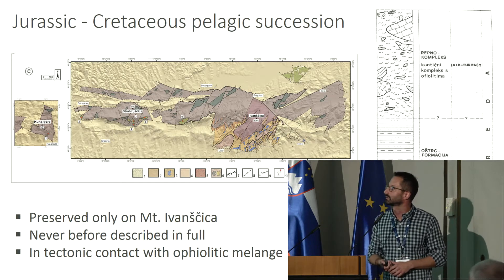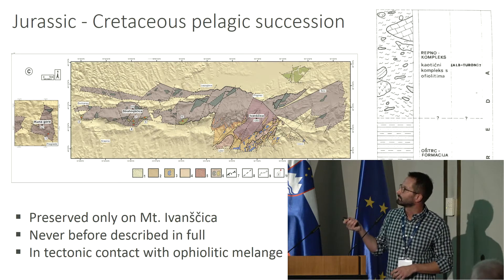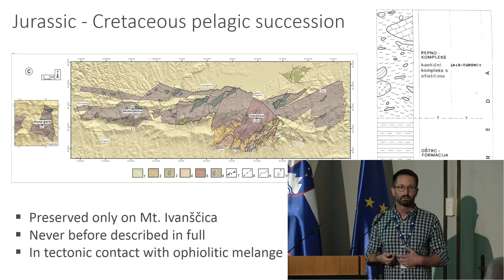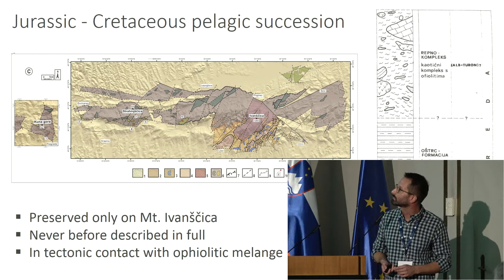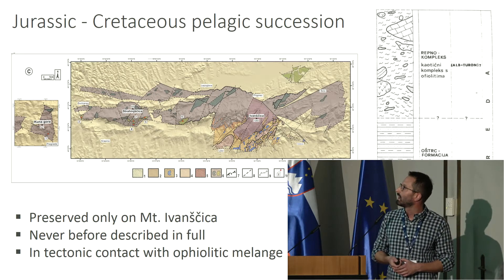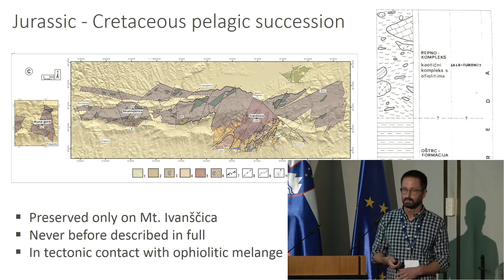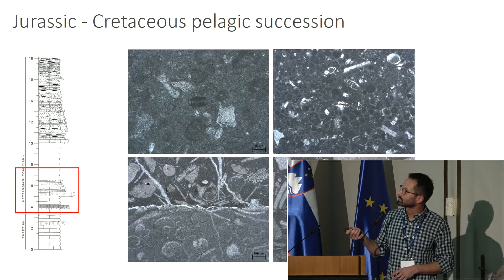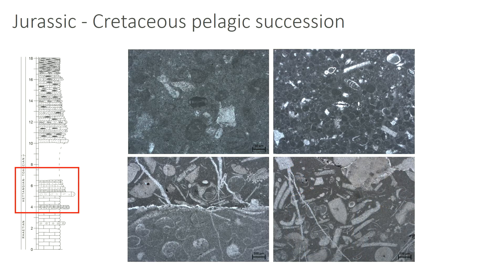Younger Jurassic and lower Cretaceous sediments are found only in Mount Ivanščica, and before they were mapped and interpreted as part of the Ophiolitic melange. However, during this recent work we were able to prove that at least part of what was believed to be blocks are actually parts of a complete succession. Until the Triassic-Jurassic boundary you have shallow water limestones, and then somewhere around this transition the shallow water environment subsides and pelagic limestones start to accumulate.